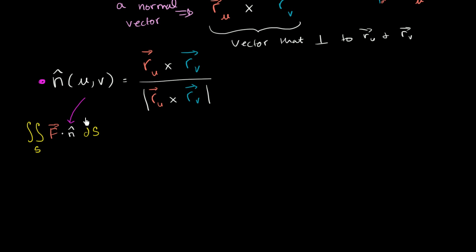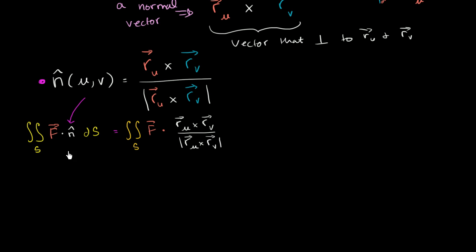So if we just substitute what we came up with as our unit normal vector right here, we get the surface integral of F dotted with the partial of r with respect to u crossed with the partial of r with respect to v, over the magnitude of that same thing — the partial of r with respect to u crossed with the partial of r with respect to v. And we know that ds can be represented as the magnitude of the partial of r with respect to u crossed with the partial of r with respect to v, du dv.